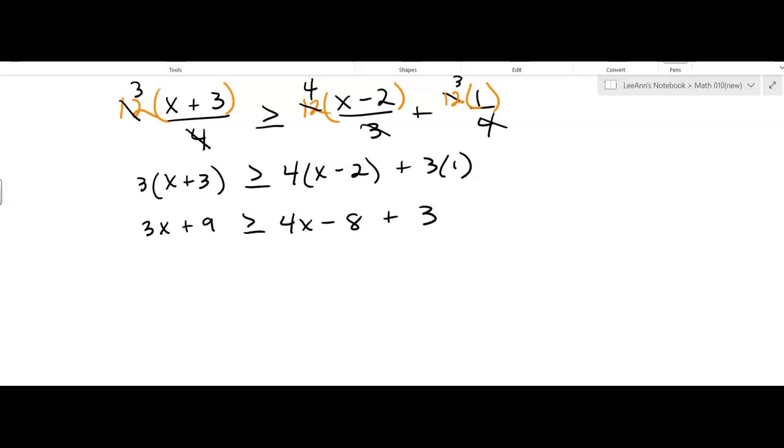...I can simplify on the right, but I'm going to go ahead and subtract the 4x at the same time. Save myself a little bit of work here. So I get negative 1x plus 9 greater than or equal to, now what's negative 8 plus 3? Negative 5.